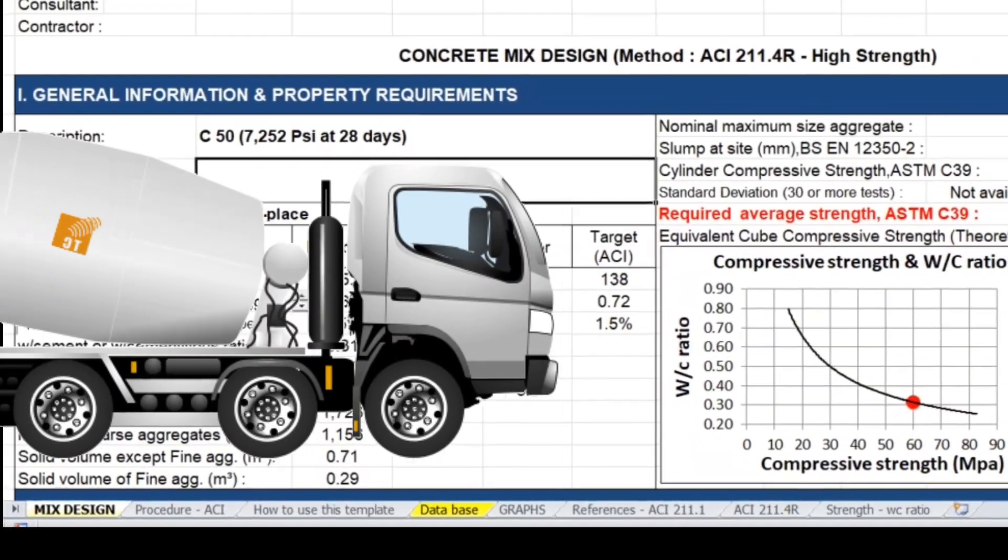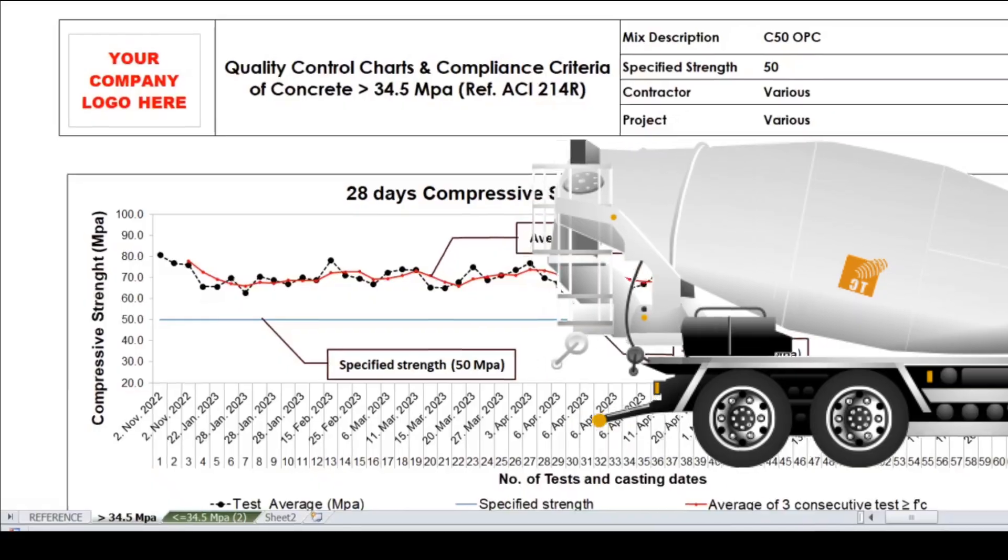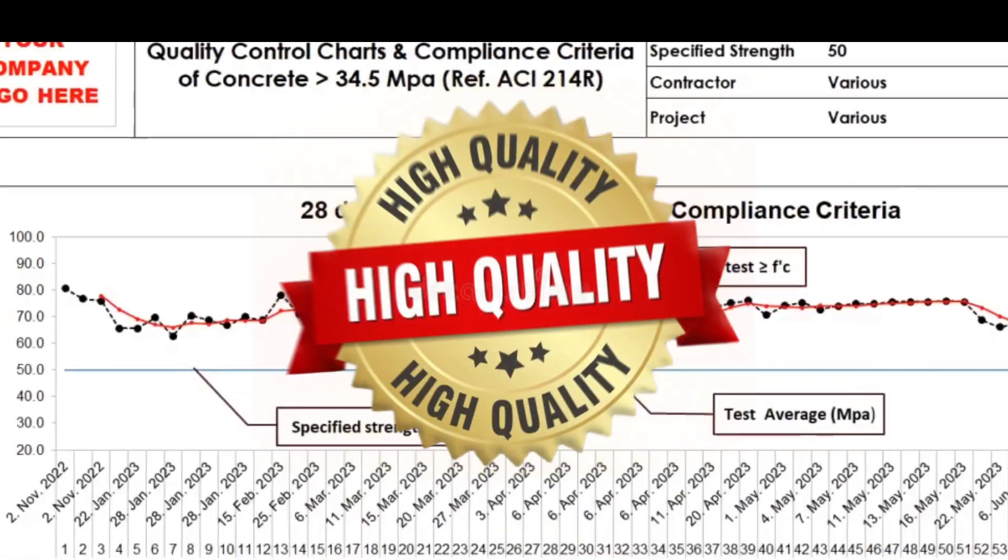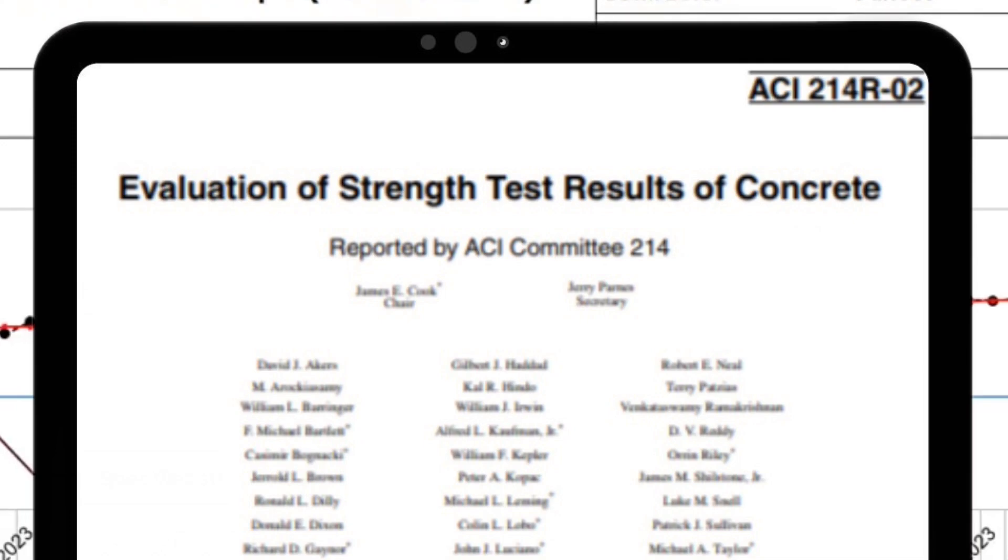So, let's say we proceed to supply it to a certain client, and it so happened that we get a very good result, as shown from this quality control chart reference to ACI 214R.